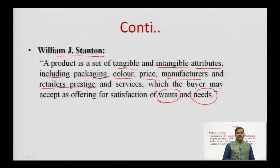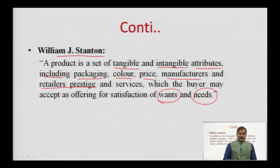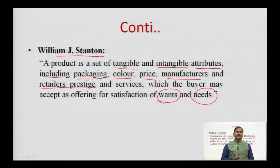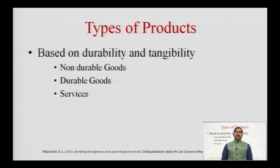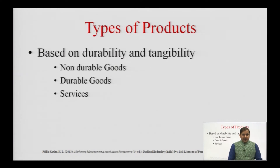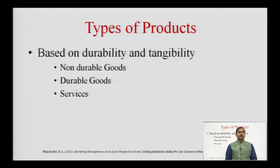So, by so far what we have come to know from these definitions is that a product is a bundle of features satisfying the stated needs of consumers. Now let us understand the different types of products in the market. Products have been classified based on certain parameters; the first classification is based on the durability and tangibility of products.